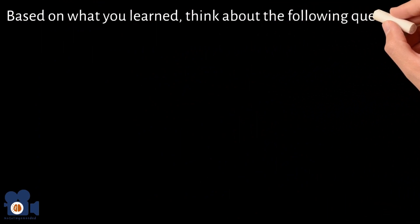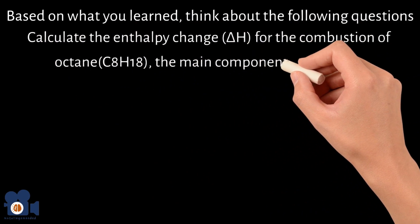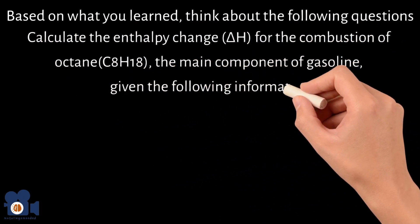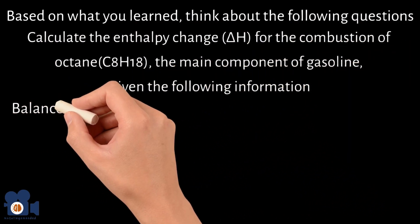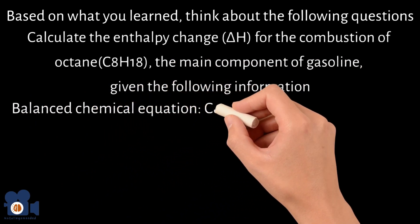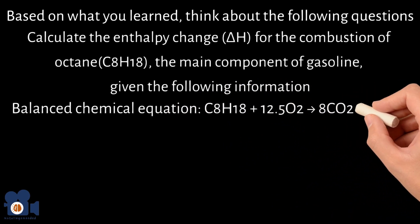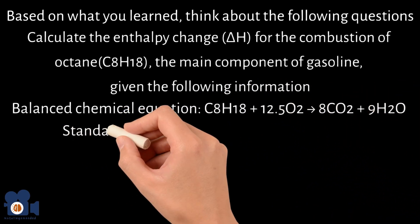Based on what you learned, think about the following question. Calculate the enthalpy change for the combustion of octane, the main component of gasoline, given the following information. The balanced chemical equation is C8H18 plus 12.5 O2 going to 8 CO2 plus 9 H2O.